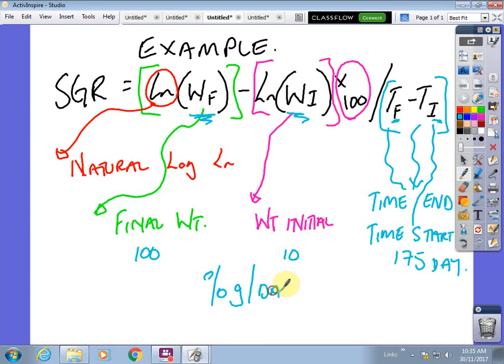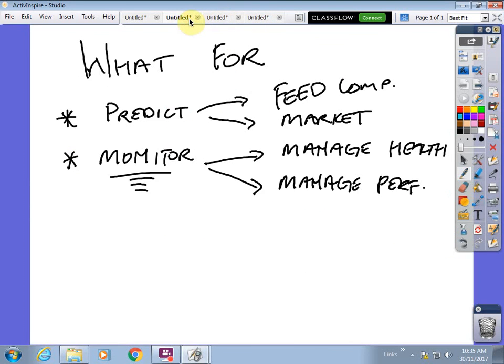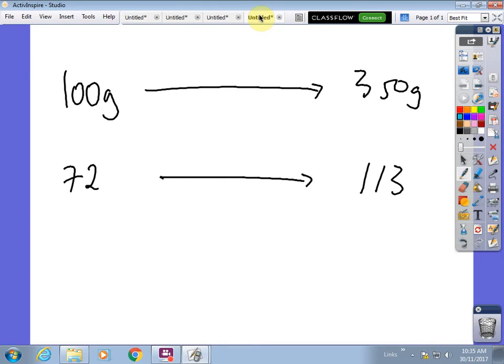Moving on, I'm going to give you an example and then I'm going to get you to calculate your own. There's a little bit of a practical exercise. At the moment we've got weight initial, weight final, we've got what we might say TF, so time final and time initial. If we pull up our little formula, we're going to go ln(WF), so weight final, minus ln weight initial, multiplied by 100, and then divided by time.